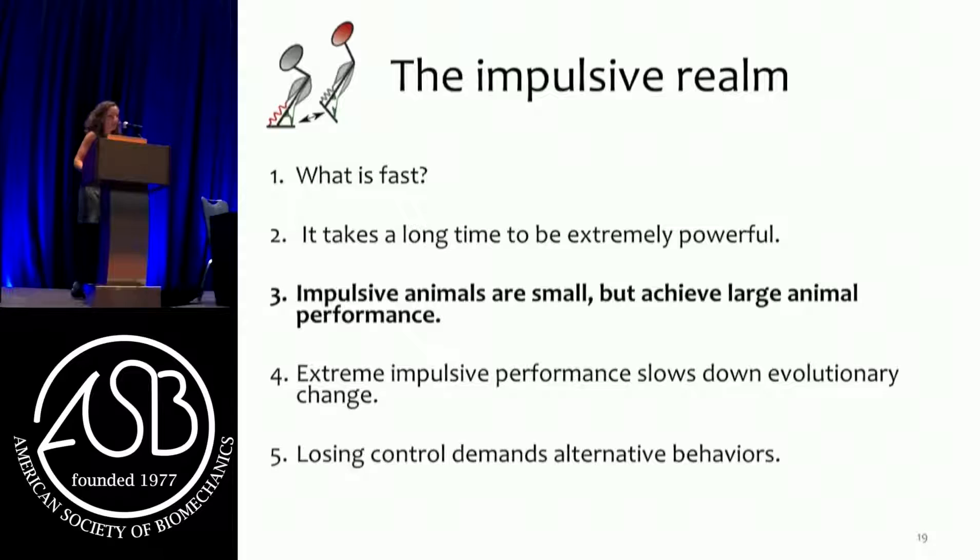Impulsive animals are small, but they achieve large-animal performance - this is a thumbs up for impulsive. Here's a video of a small mantis shrimp that's going to break open a snail shell that would take me and a hammer to break open. This animal's hammers have the same mass as two toothpicks, and you're going to watch it break open a snail shell without any trouble. Incredible power from these bullet-like accelerations.